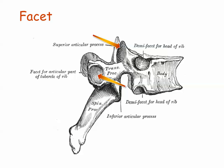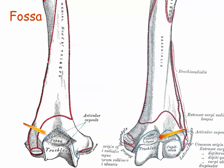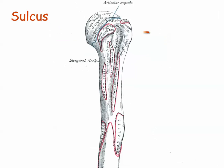We often identify features on the surface of a bone. A facet, for example, is a flat surface that forms a joint with another facet or flat bone — facet literally means little face. A fossa is a depression, often an indentation that receives an articulating bone; the word fossa literally means ditch. An elongated depression, or groove, may be called a sulcus; the word sulcus literally means trench.